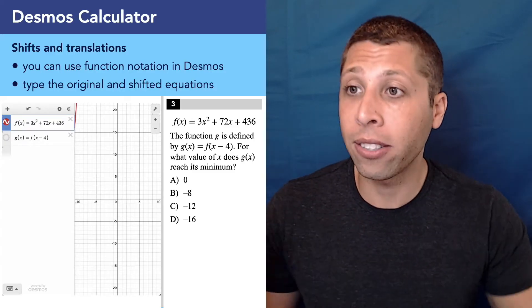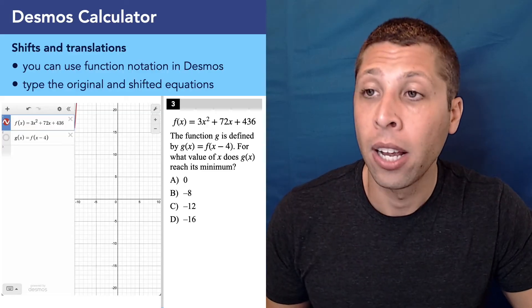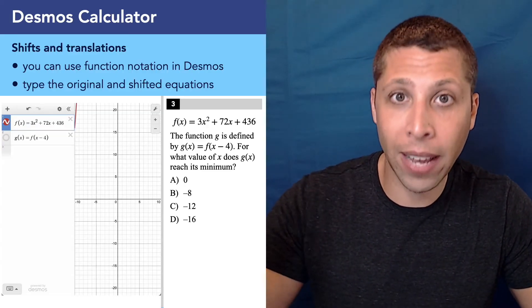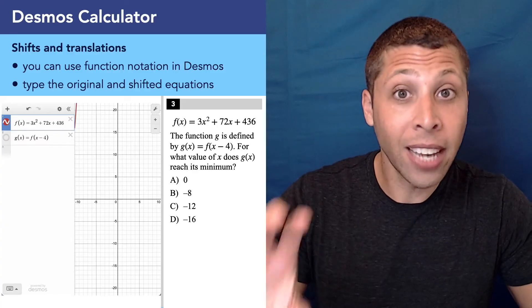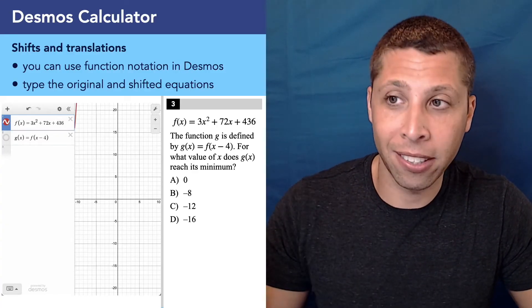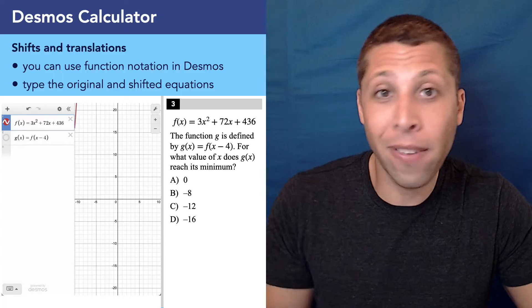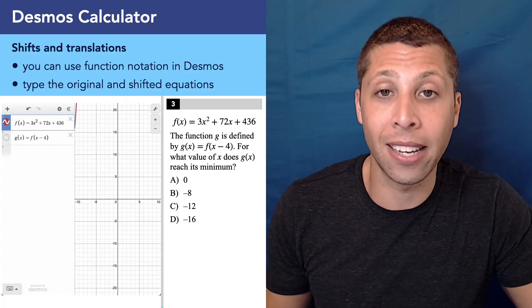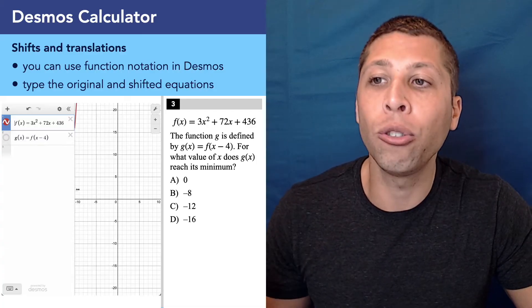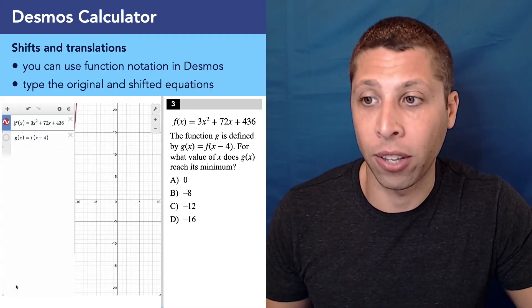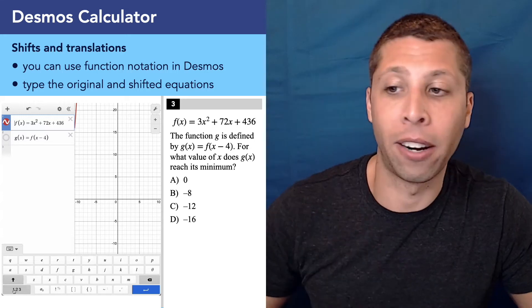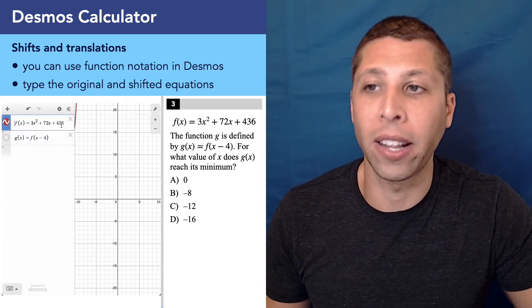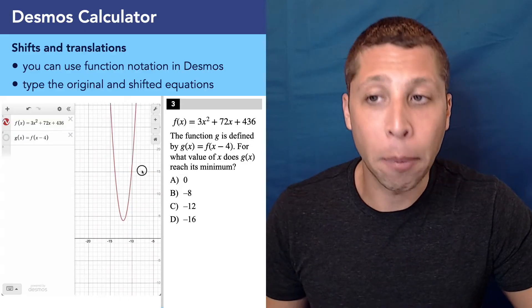But I do find that this is also one of those cases where people are prone to error. So I wouldn't trust just my logic and my knowledge. I'd want the calculator to show me that my instincts are correct. So what we can do is not only use y equals to set up an equation, but we can use function notation itself. So we have f of x here setting us up so that way we can type the original f of x equation. And then the second line I typed the g of x equation using f of x.